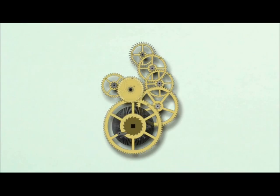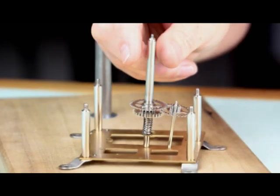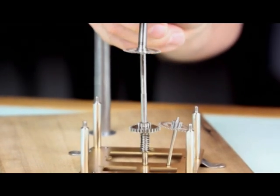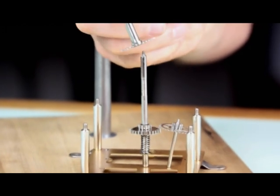It's called the hour pipe rather than the hour arbor because it is a long tube that slips over the center arbor, creating the concentric hands of the clock.